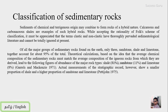Of all major groups of sedimentary rocks found on Earth, only three — sandstone, shale, and limestone — together account for 95% of the total sedimentary rock present. Theoretically, based on the idea that the average chemical composition of sedimentary rocks must match that of igneous rocks, Garrels and Mackenzie (1971) proposed that shale dominates at 81%, followed by sandstone, then limestone at 8%. However, actual measurement of the stratigraphic record shows a smaller proportion of shale and a higher proportion of sandstone and limestone, as proposed by Pettijohn in 1975.